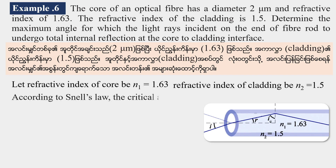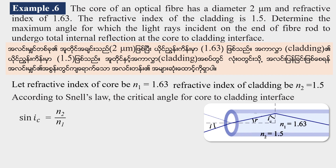According to Snell's law, the critical angle for the core-to-cladding interface is given by sine of the critical angle equals N2 divided by N1.